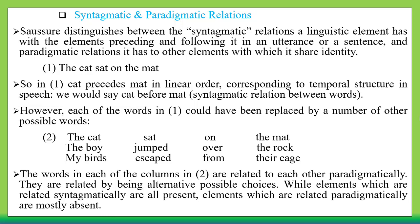For example, take the sentence 'The cat sat on the mat.' The cat precedes mat in linear order; we cannot say 'the mat sat on the cat' — that would be meaningless. The cat comes before sat, sat comes before on the mat. This relation of each word with the one that precedes and follows it is syntagmatic.